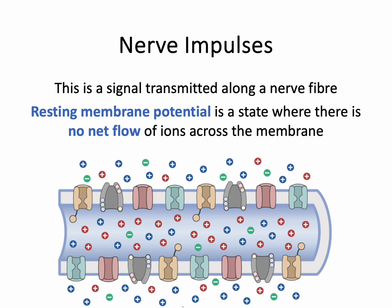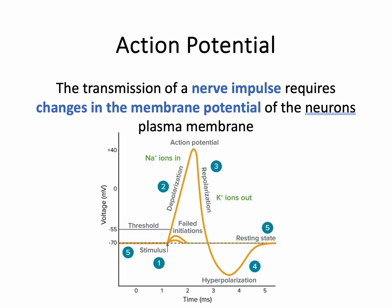First of all, you might remember the term resting membrane potential. This is a state where there is no net flow of ions across the membrane — this is just the resting potential. Any change in the flow of ions is then going to have an impact on that potential. So if we were to actually generate a nerve impulse, we're going to need a change in that membrane potential — ions moving in or ions moving out could have some form of effect here. This diagram at the bottom we will be coming to in a lot more detail, but essentially it's looking at the changes in ion movement and what the effect is on what we call the action potential.